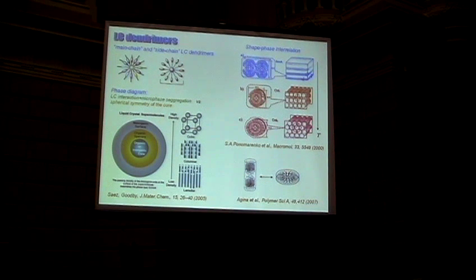So at the end, either one or another tendency wins, and it was found that the main point is the density, the packing density of the mesogens on the surface of the molecule. So if it is increasing, then the dendritic phase are followed by the columnar phase.